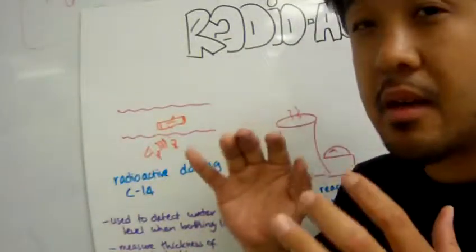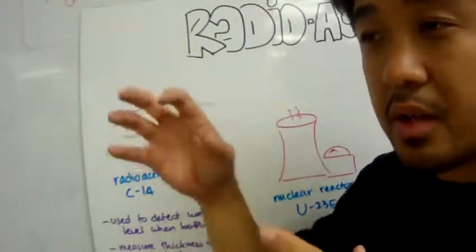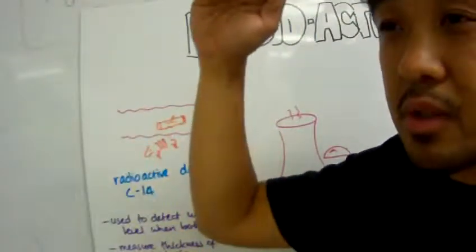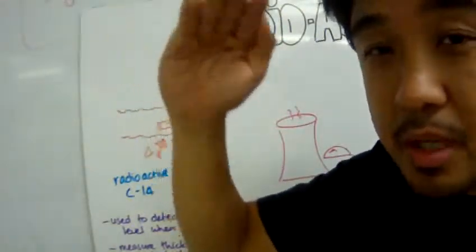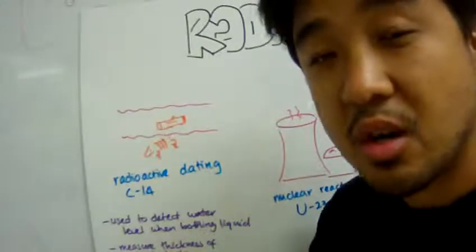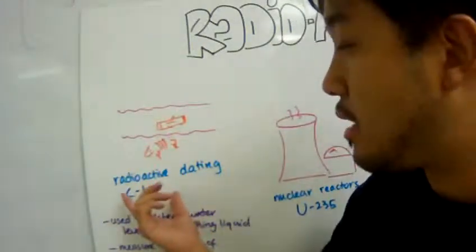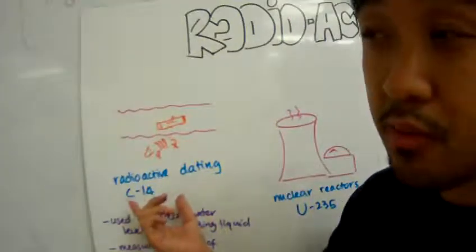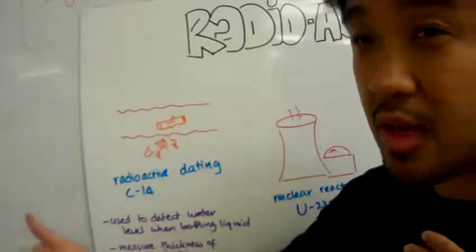The calculations involved in measuring the amount of time required for a sample to be half of the amount is called half-life. And because the rate of decay for radioactive isotopes is quite predictable in the long run,